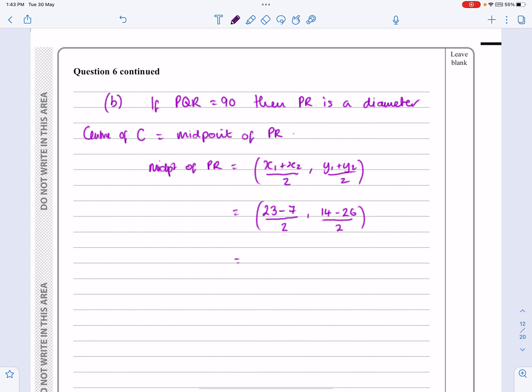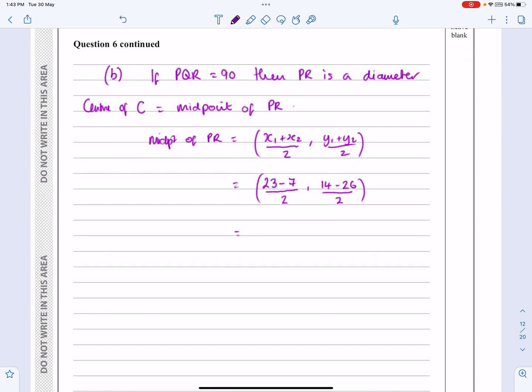The signs do actually make a difference there. So that's going to give me 16 over 2, that's 8, and that's going to give me minus 12 over 2, that's minus 6. So that's the midpoint of PR, and hence it's the centre of the circle.